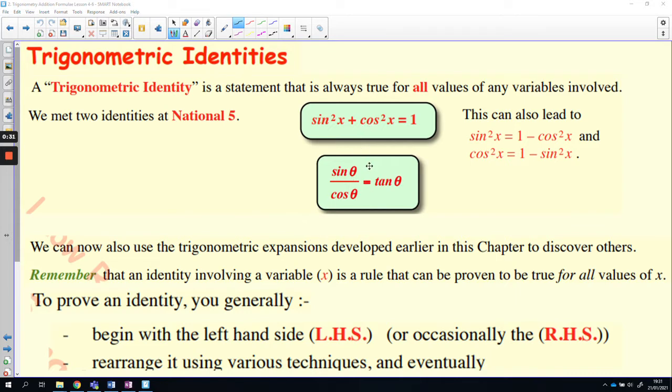Okay, there's two identities that you need to remember. You've got sin squared x plus cos squared x equals 1. Bearing in mind, of course, that these can be rearranged. And the second one is sin over cos equals tan. Okay, so we need to remember these two trig identities.